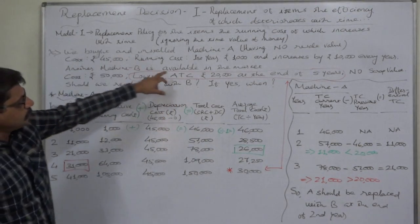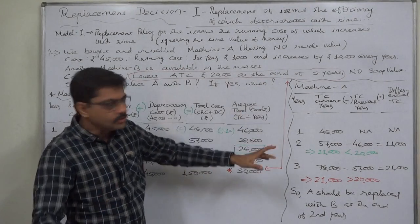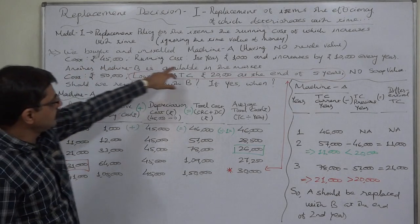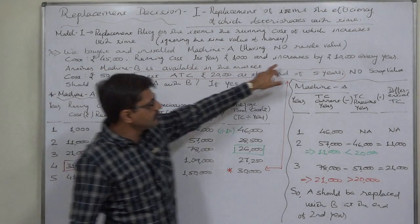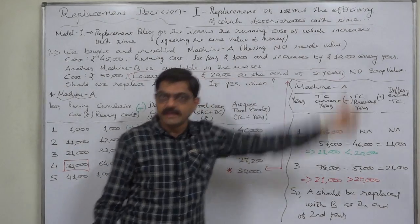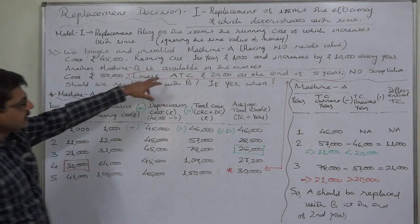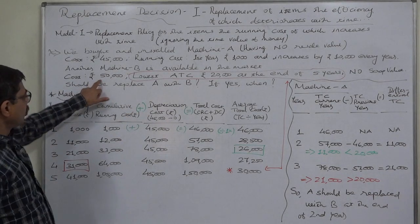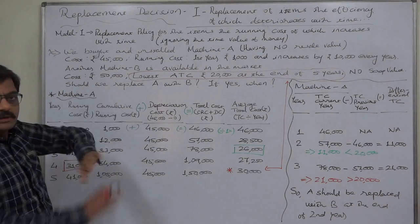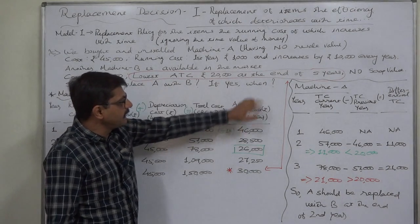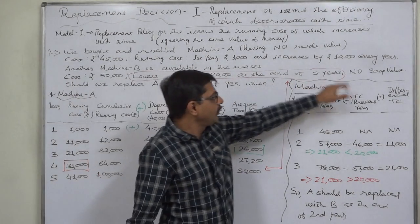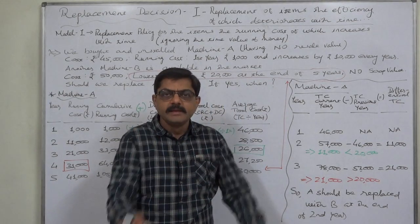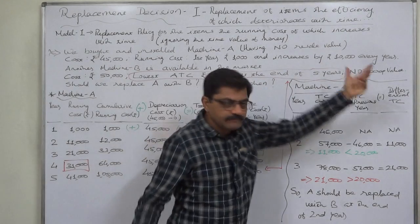We have already bought and installed Machine A, which has no resale value. Its cost is Rs. 45,000, running cost in the first year is Rs. 1,000, and it increases by Rs. 10,000 every year. Another Machine B is available in the market now or in the future. Its cost is Rs. 50,000, with a lowest average total cost of Rs. 20,000 at the end of 5 years. No scrap value.